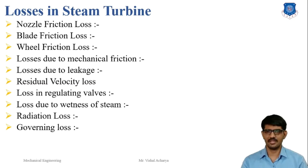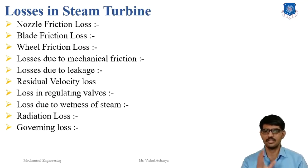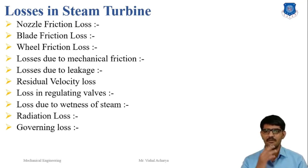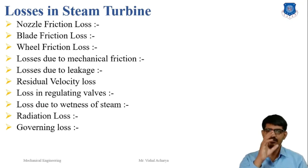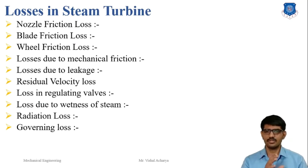Second is the blade friction loss. This loss is important for both impulse and reaction turbines. Blade friction loss is due to steam flowing over the blade surface. The effect on the turbine blade is considered as a blade velocity coefficient, and the relative velocity of steam is reduced due to these losses.